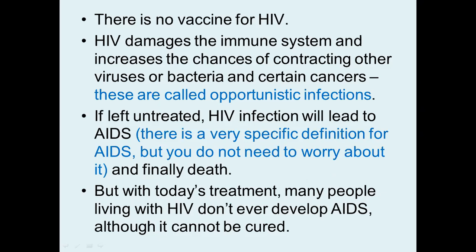There is no vaccine against HIV. This is a huge field of interest — my master's degree is on HIV education. HIV damages the body's immune system and increases the chances of contracting other viruses, bacteria, and certain cancers. These other infections that occur are called opportunistic infections — infections that occur when the body's immune system is so damaged by HIV that it can't fight them off.